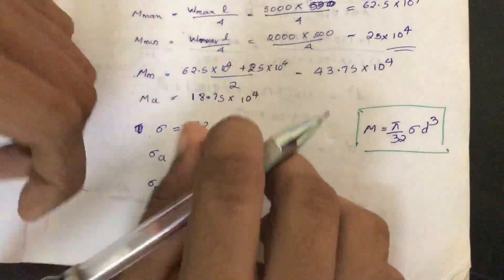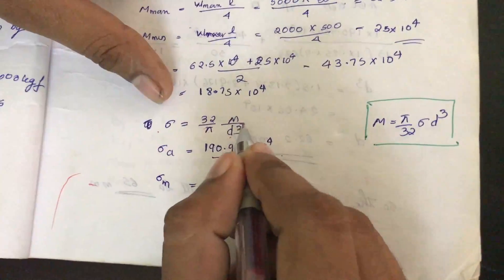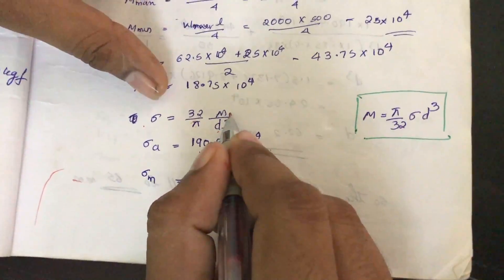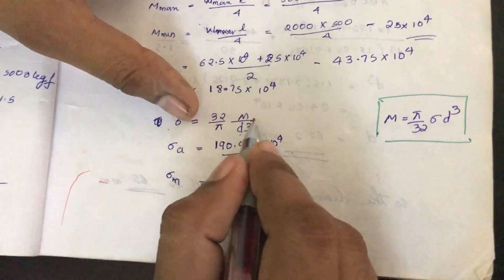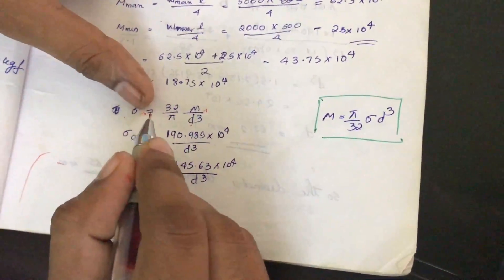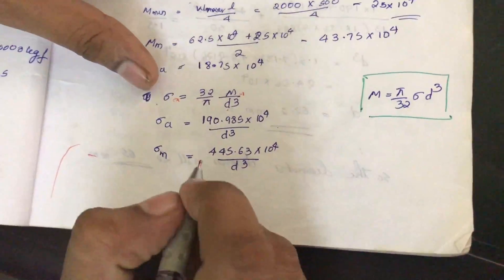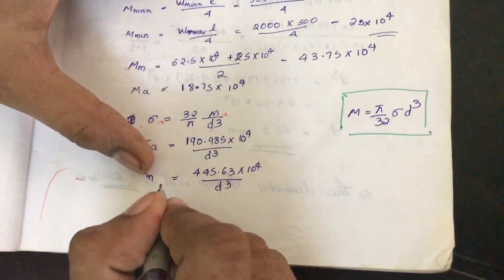Now sigma equals 32M/(πD³). If we substitute M mean, we get sigma mean. If we substitute M alternate, we get sigma A (sigma alternate). Thus we have obtained sigma A and sigma M.